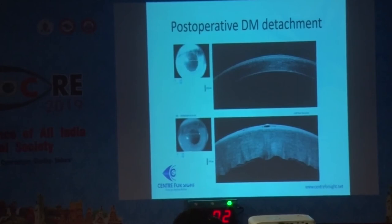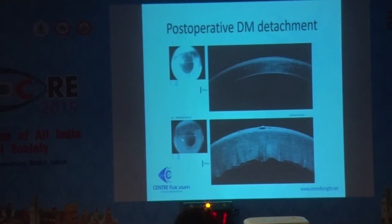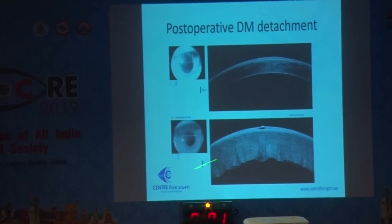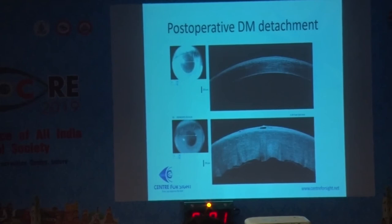Almost 14% of Descemet's membrane detachments post-surgery are not able to be assessed on slit lamp examination — we need AS OCT for that, especially in the presence of dense corneal edema. In this case, the patient had dense corneal edema and we weren't sure what was happening, but AS OCT confirmed a large DM detachment. We put an air bubble inside the anterior chamber, and the next day the cornea was clear and the membrane attached very well.